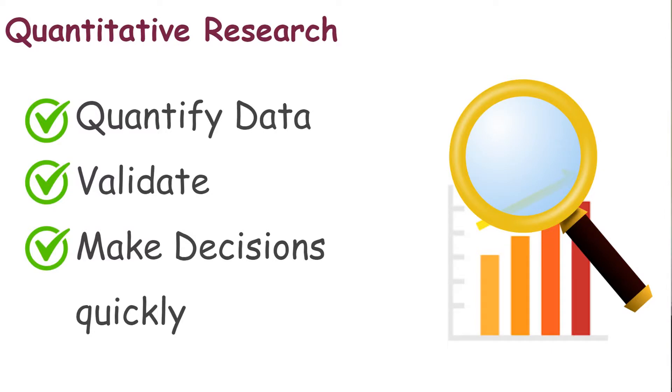To summarize, in quantitative research you can quantify data, validate findings, and make decisions quickly. Quantitative research can be conducted via surveys or experiments. Surveys can be conducted in person or with the help of online tools — SurveyMonkey is one example where participants can fill out a questionnaire online. The questions asked are closed-ended questions.